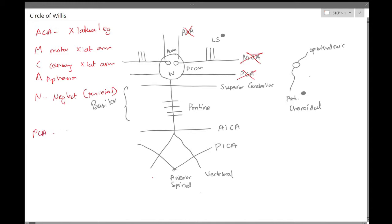Next, we're going to have PCA strokes, and PCA strokes are always going to be visual deficits, and this is due to the occipital lobe. The most common high-yield tested visual deficit is homonymous hemianopsia. Homonymous meaning it's the same, hemi as in half, anopsia as in loss of visual field.